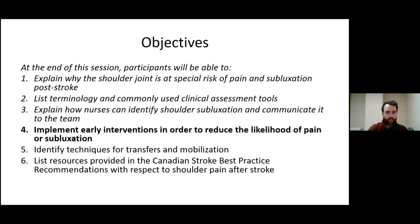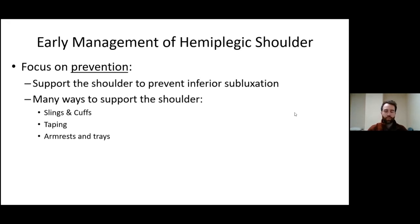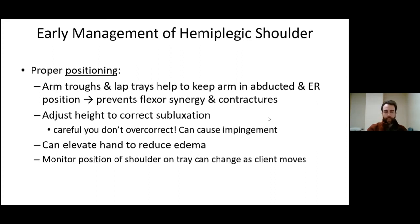Next, we'll discuss implementing early interventions to reduce likelihood of pain or subluxation. We want to prevent subluxation in the first place. Remember those first three weeks are the period of lowest muscular support — patients depend on external support for the humeral head to not drop out of the glenoid socket. There are many ways to accomplish this: a variety of slings, cuffs, taping techniques, and various arm rests and trays. Ultimately, we're just trying to keep the humeral head relatively centered in the glenoid socket through good positioning.